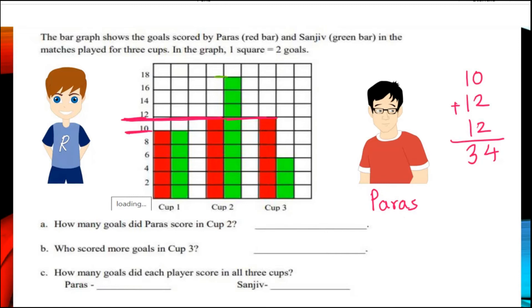Now children let us see how much Sanju achieved. In first match Sanju achieved 10 goals, in second match he achieved 18 goals as you can see in the picture. Then in the third match Sanju achieved only 6 goals. And if we add and find out the total, Sanju also achieved 34 goals.